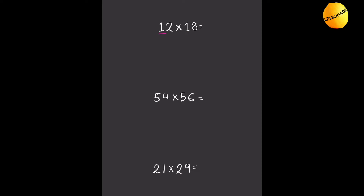First we're going to multiply the tens place by its next highest number. The tens place is 1 in this case, so we times it by 2 — 1 times 2 is 2, and we write that 2 here. Then we multiply the units places: 8 times 2 is 16, and we write the 16 there. So the answer is 216.